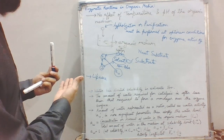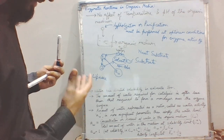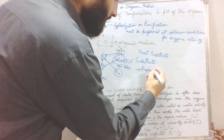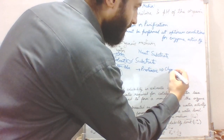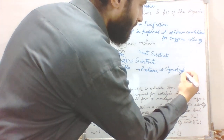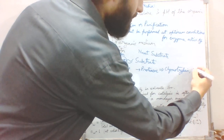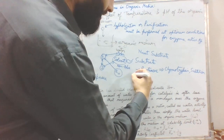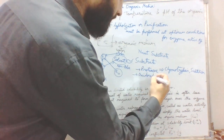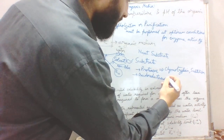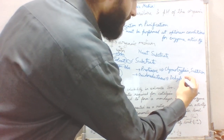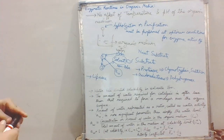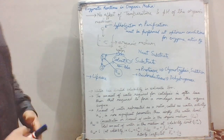Generally, lipases have been the enzymes most commonly used in organic medium because lipases act on lipids, which are hydrophobic. However, it has been successfully demonstrated that enzymes such as proteases — like chymotrypsin and subtilisin — and oxidoreductases such as various dehydrogenases have also been shown to work in different organic media.